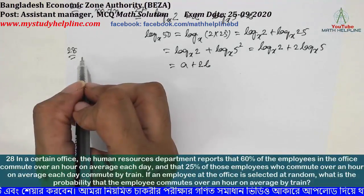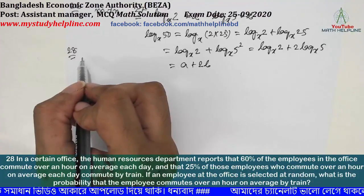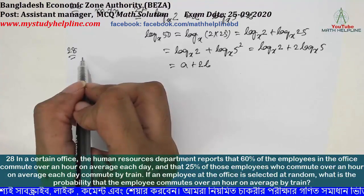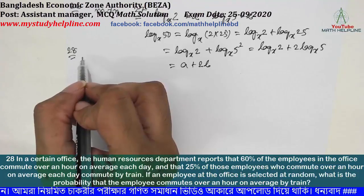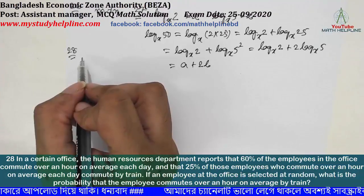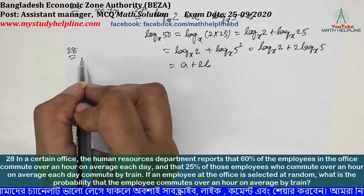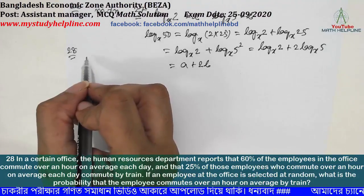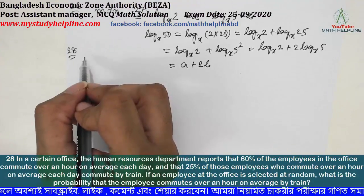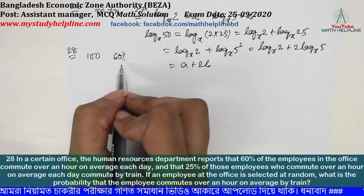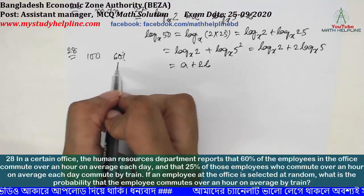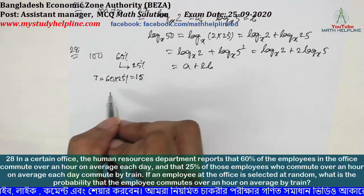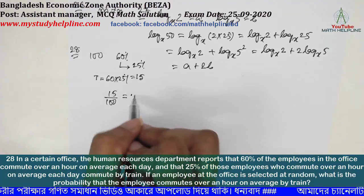In a certain office, the human resource department reports that 60% of employees commute over an hour on average each day, and 25% of those employees commute by train. If an employee is selected at random, the probability that the employee commutes over an hour by train is 0.15.